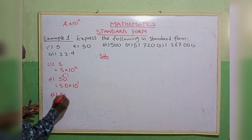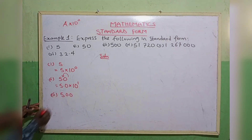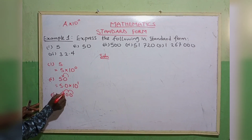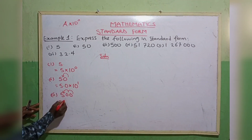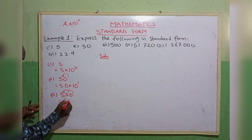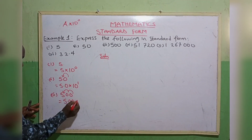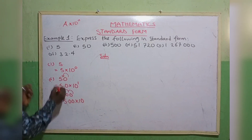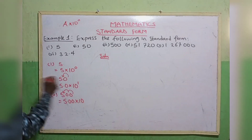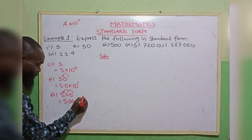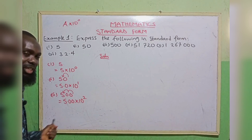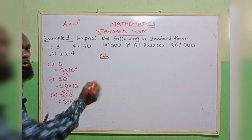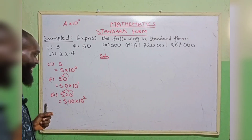The third one: 500. We move the decimal point forward 1, 2 places, giving 5.00, multiplied by 10 raised to the power 2. I have moved forward twice, so that is power 2. Because I am moving forward, it is positive; if I am moving backward, it is negative.